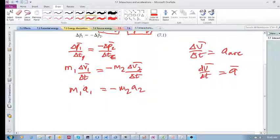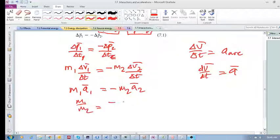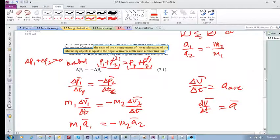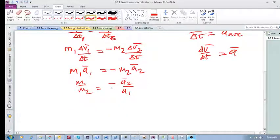And if you rearrange this—these are vectors by the way—if you rearrange this you get m1 over m2 is the negative of acceleration two over acceleration one. And you can rearrange this in various ways, in various ways, but you end up with exactly the same thing here. So this is interactions and accelerations.